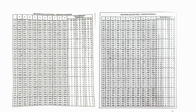Let me introduce you to the reciprocal table. The table starts from 1.0 and ends at 9.9. The next columns start from 0 and end at 9. The last part of the table — the mean difference part — starts from 1 and ends at 9. The pattern of the reciprocal table is the same as that of the log and anti-log table.